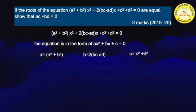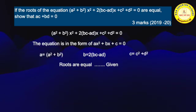In the problem we are given that the roots of the quadratic equation are equal. Whenever the roots of a quadratic equation are equal, the discriminant value is equal to 0. So, discriminant = b² - 4ac = 0. Now we have to substitute the values of a, b, and c.